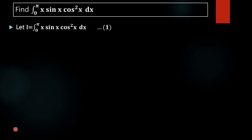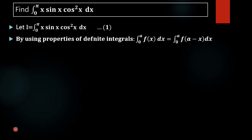To evaluate this integral, we are going to use the properties of definite integrals. The property is: ∫₀^a f(x) dx = ∫₀^a f(a−x) dx. This property is especially useful when we have a trigonometric function with variable x, as it helps simplify the integral into an easily integrable form. Here, instead of x, we put π−x as the variable.